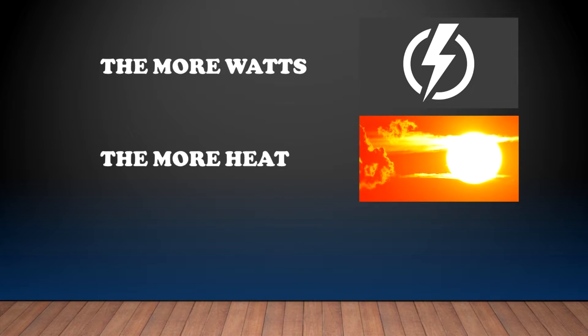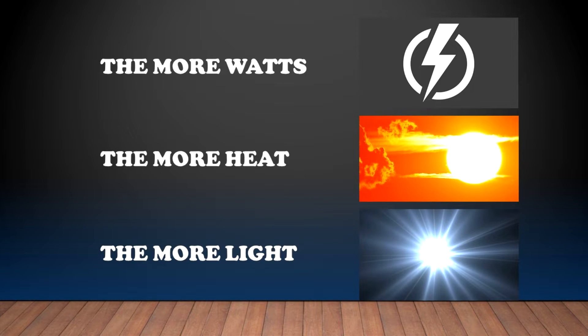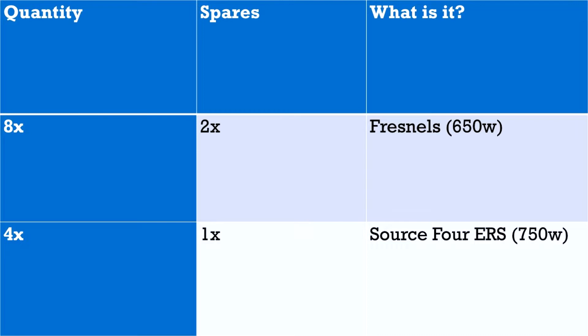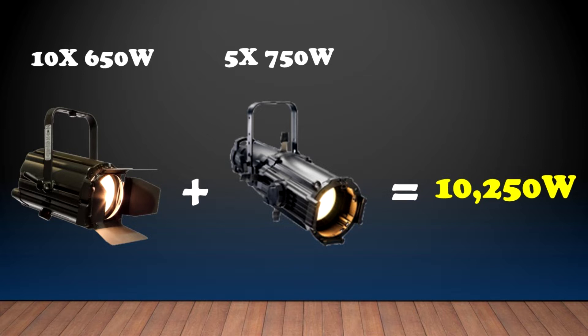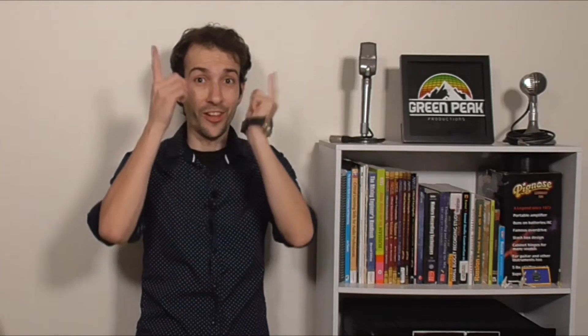The way they work is the more wattage they have, the more heat they will generate and the more light you will get. So in our previous example where we had 10,650 watts Fresnels and 5,750 watts ERS, that would come up with a total of 10,250 watts. Now that's a lot!